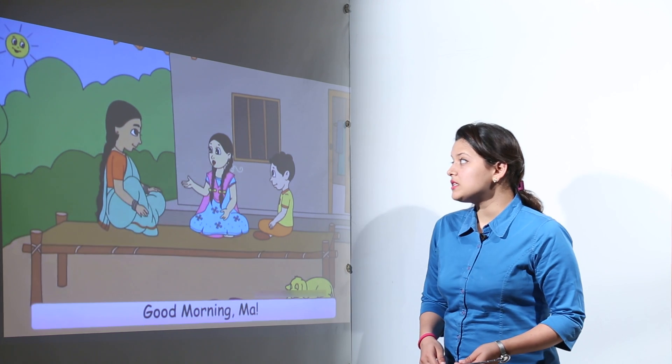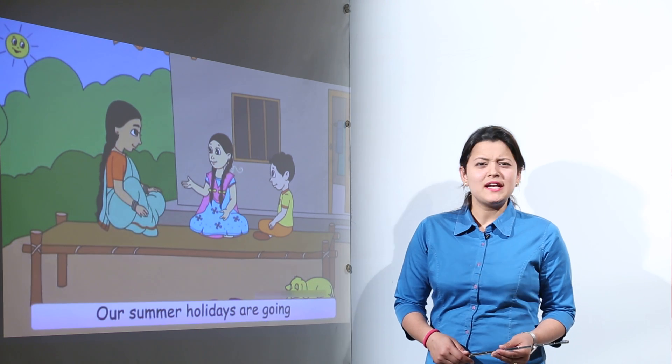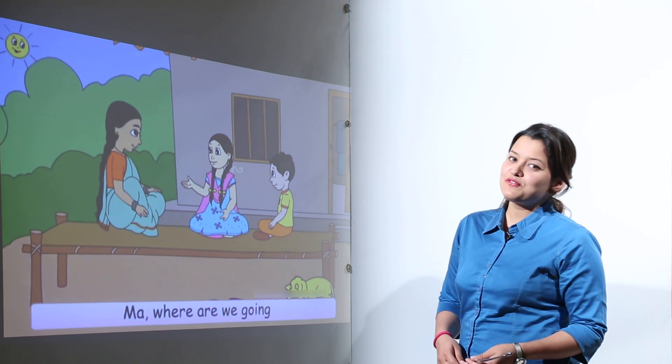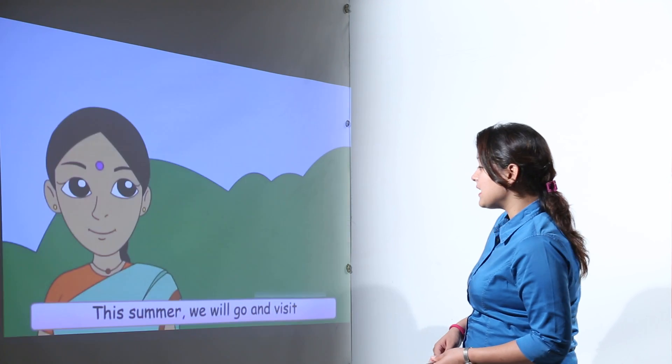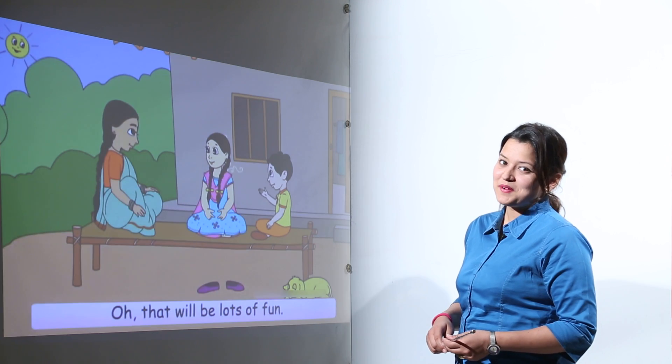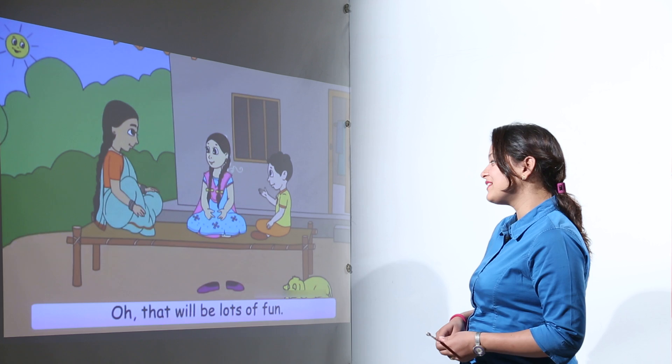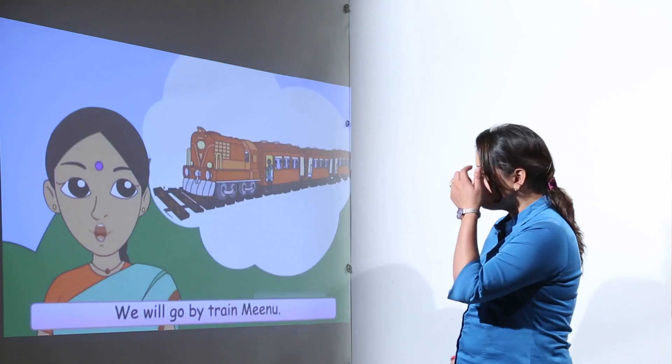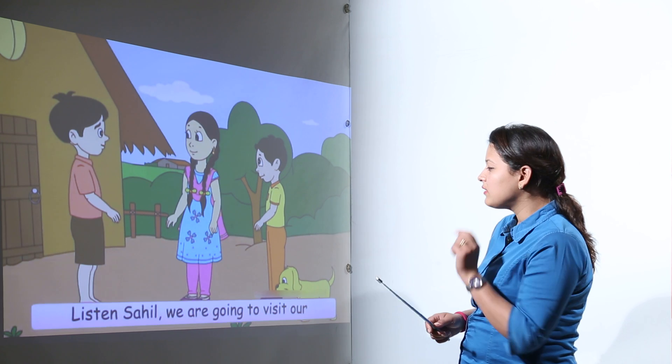One day Minu and Chinu were sitting with their mother discussing the plan for summer vacations. What was the plan? The mother says on this summer vacation they are going to visit their grandmother. That's really fun. So how are they going to travel to their grandmother's house? They are definitely going to travel by train.